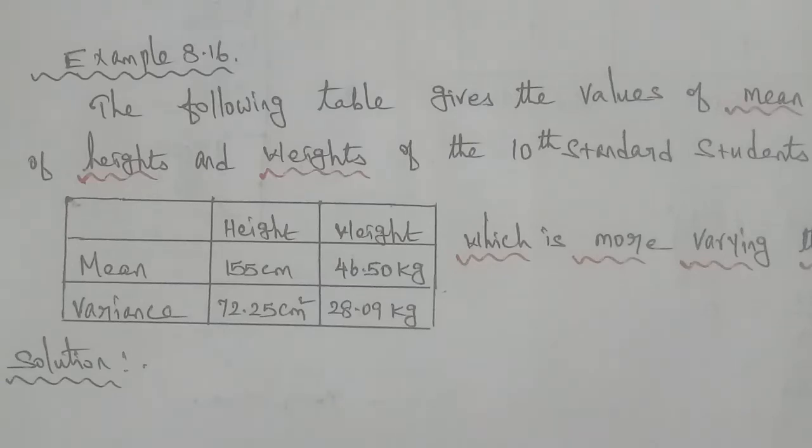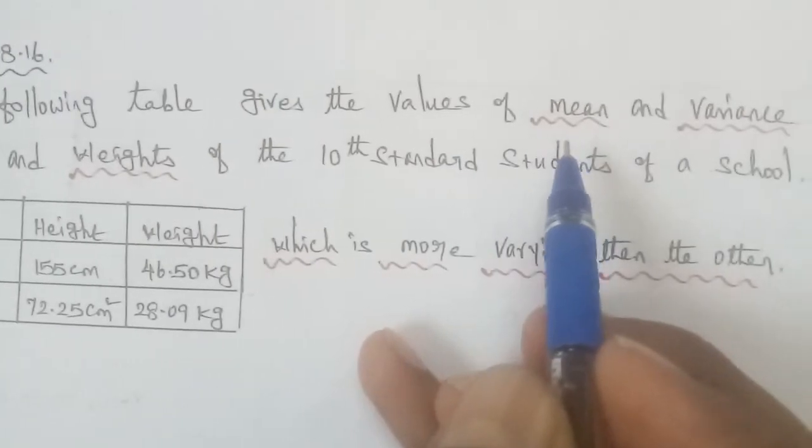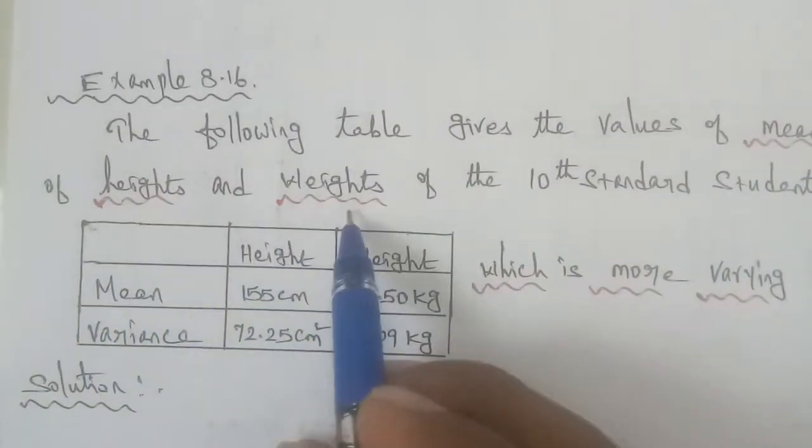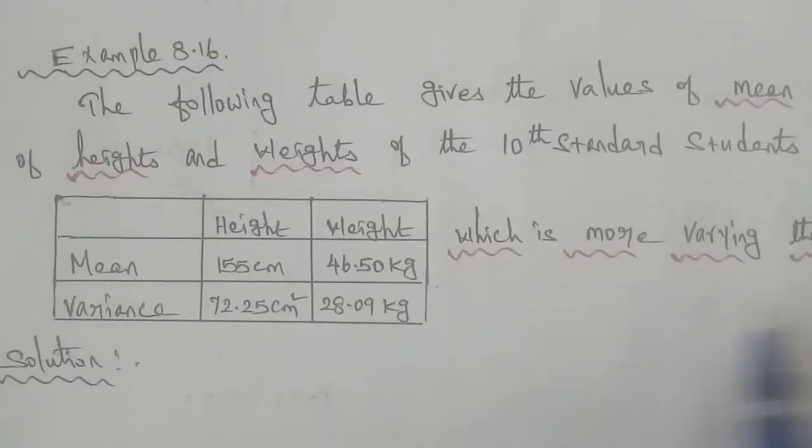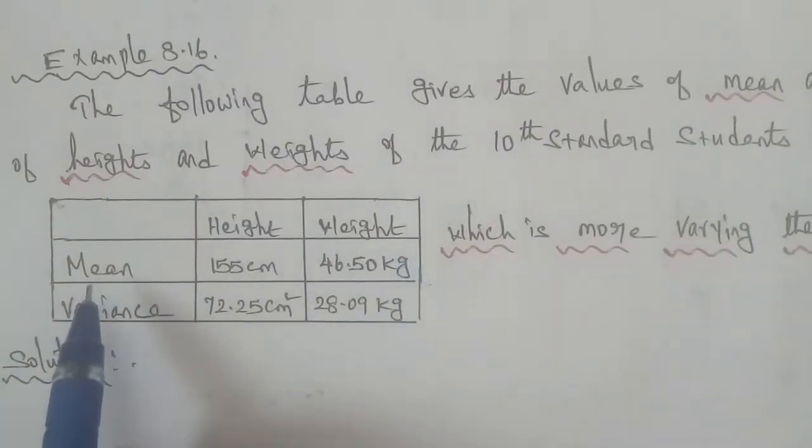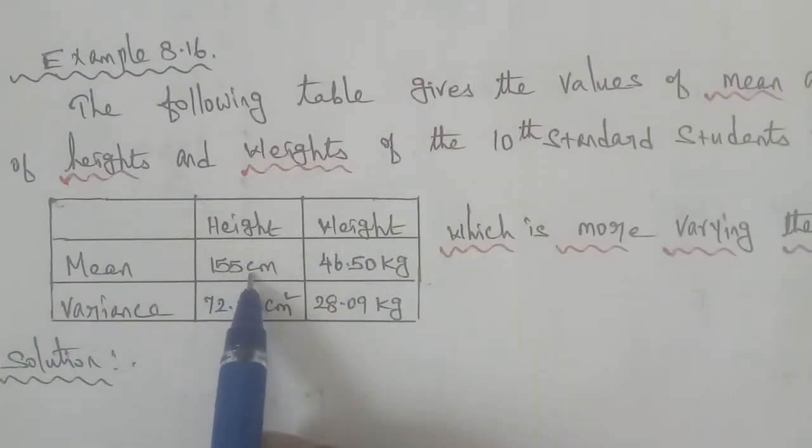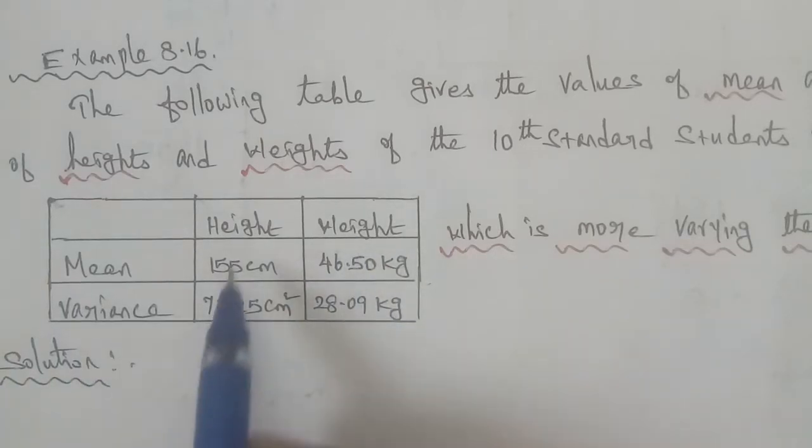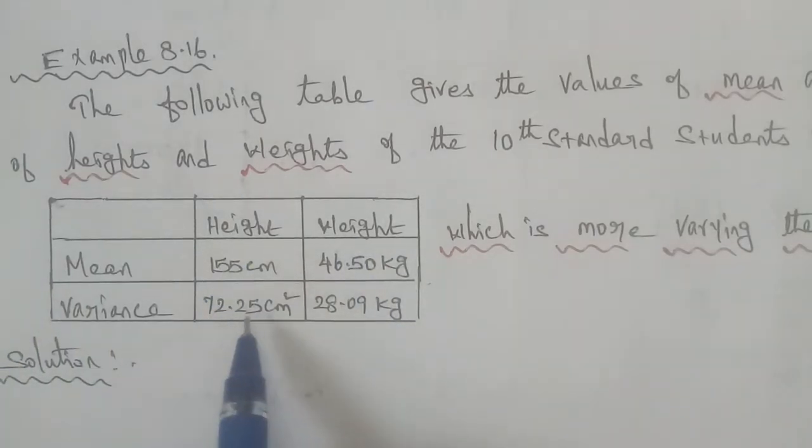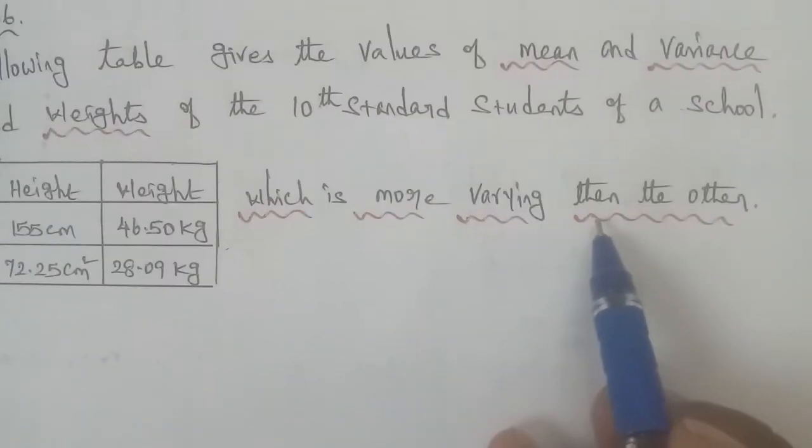Hi students, example 8.16. The following table gives the values of mean and variance of height and weight of the 10th standard students of your school. Given question in the table, mean and variance in the height and weight. Mean in height 155 cm, 46.50 kg in weight. Variance is 72.25 cm squared, weight is 28.09 kg, which is more varying than other.